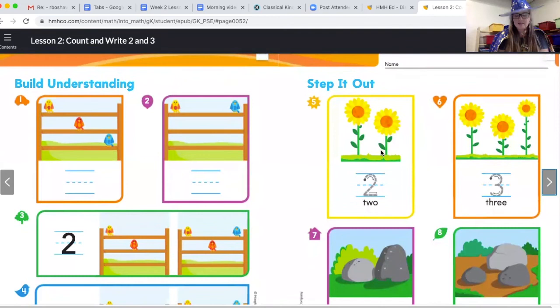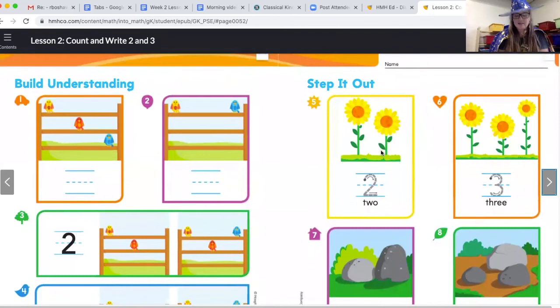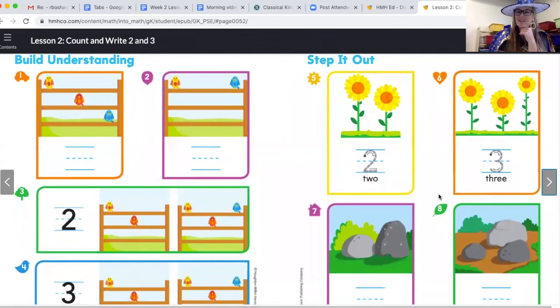Number five. Ready? Number five. What I want you to do here is I want you to count how many flowers and then trace the number. Count how many flowers and trace the number. So what we're doing for five and six, let's count out loud. I want you to count and I'm going to listen to you count. Ready? Go. Okay. Now do this one. Good counting. And you're going to trace those numbers.